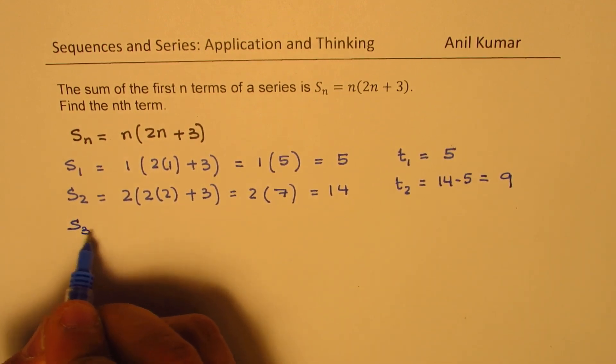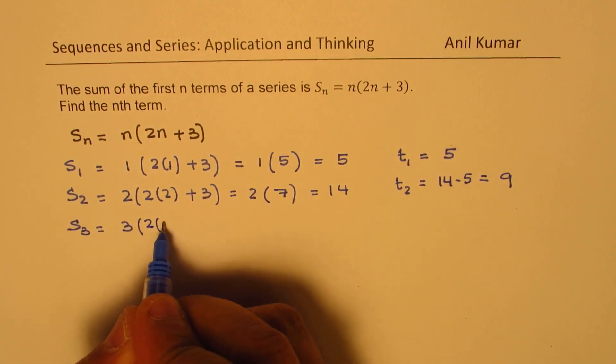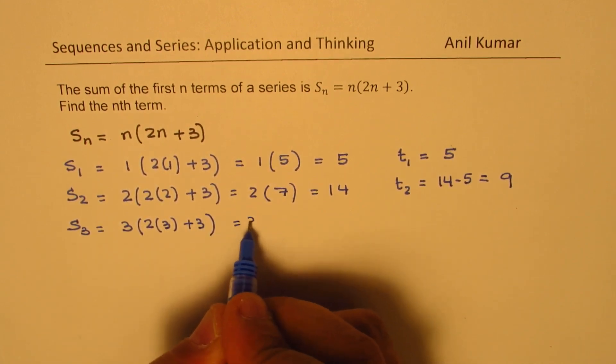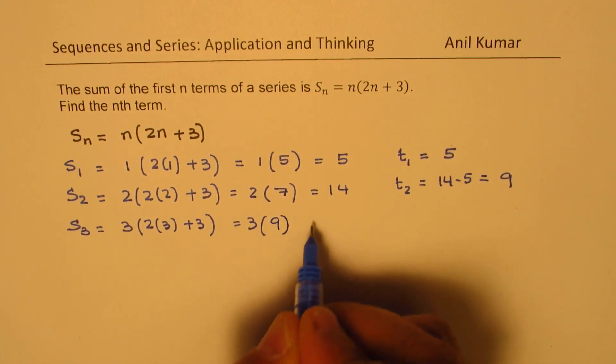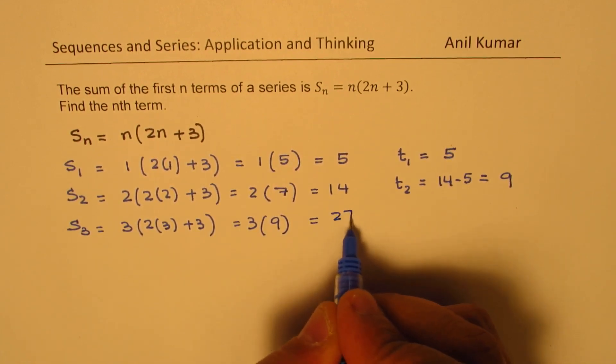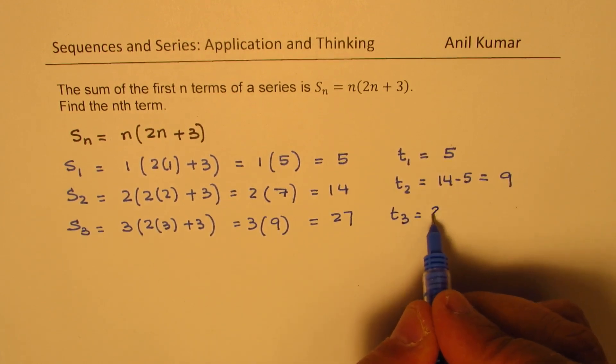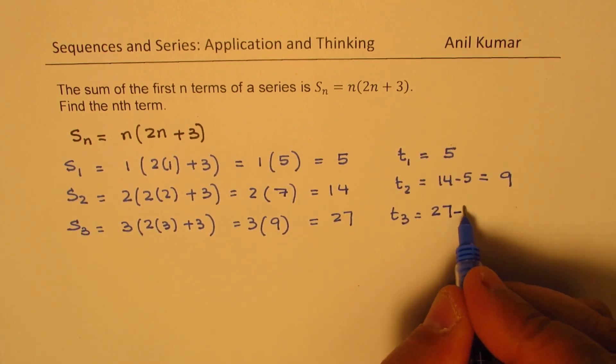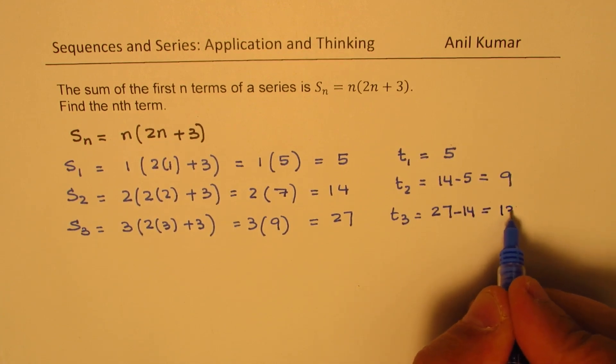Now let's find the sum of three terms. So first three terms sum will be 3 times 2 times 3 plus 3. Now that gives you 3 times 2 times 3 is 6 plus 3 is 9. We get 27. So the third term will be 27 minus sum of previous 2, so minus 14. So that gives you 13.